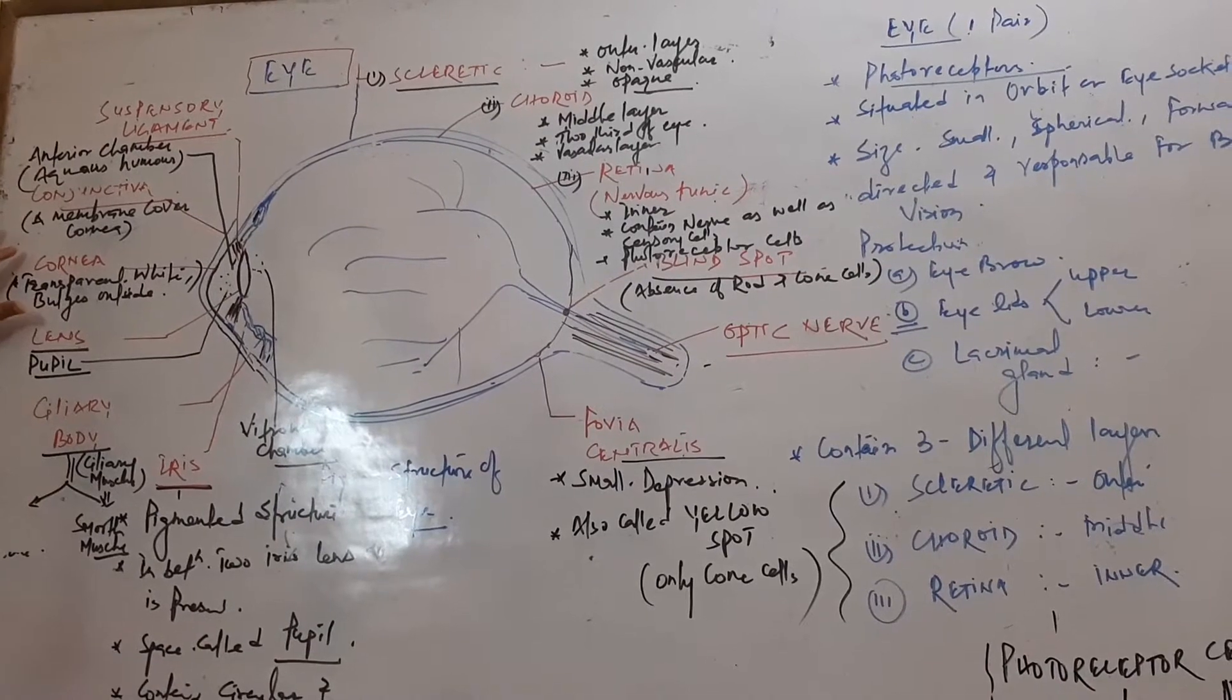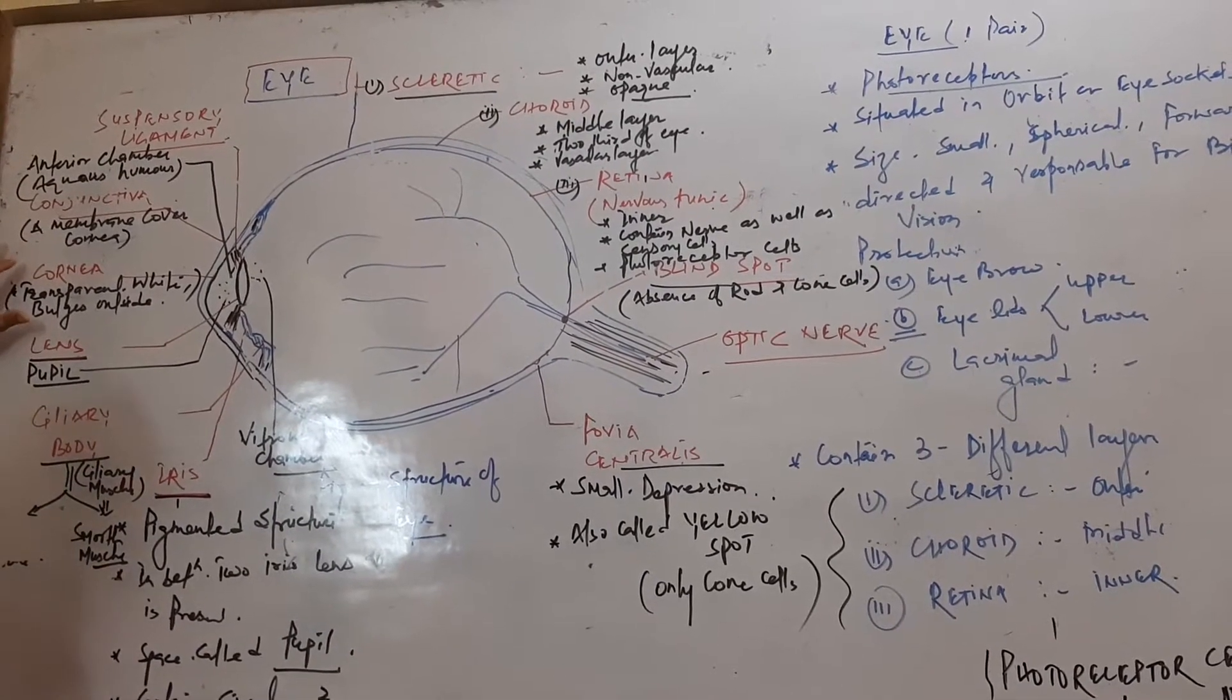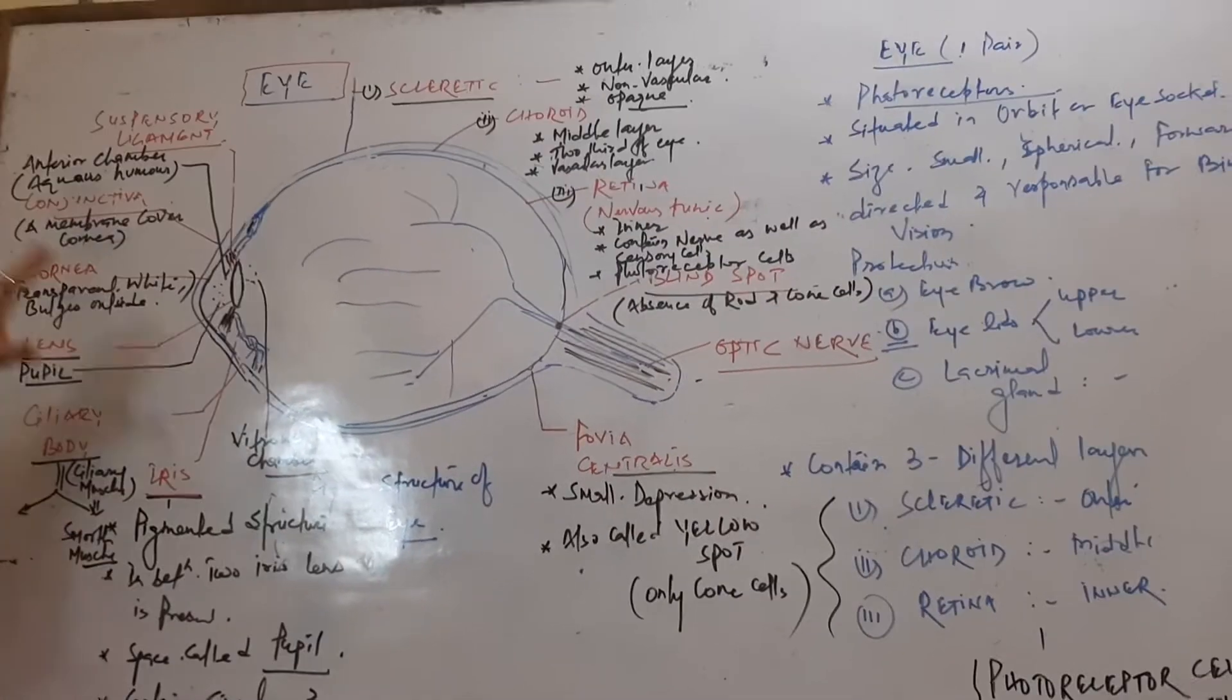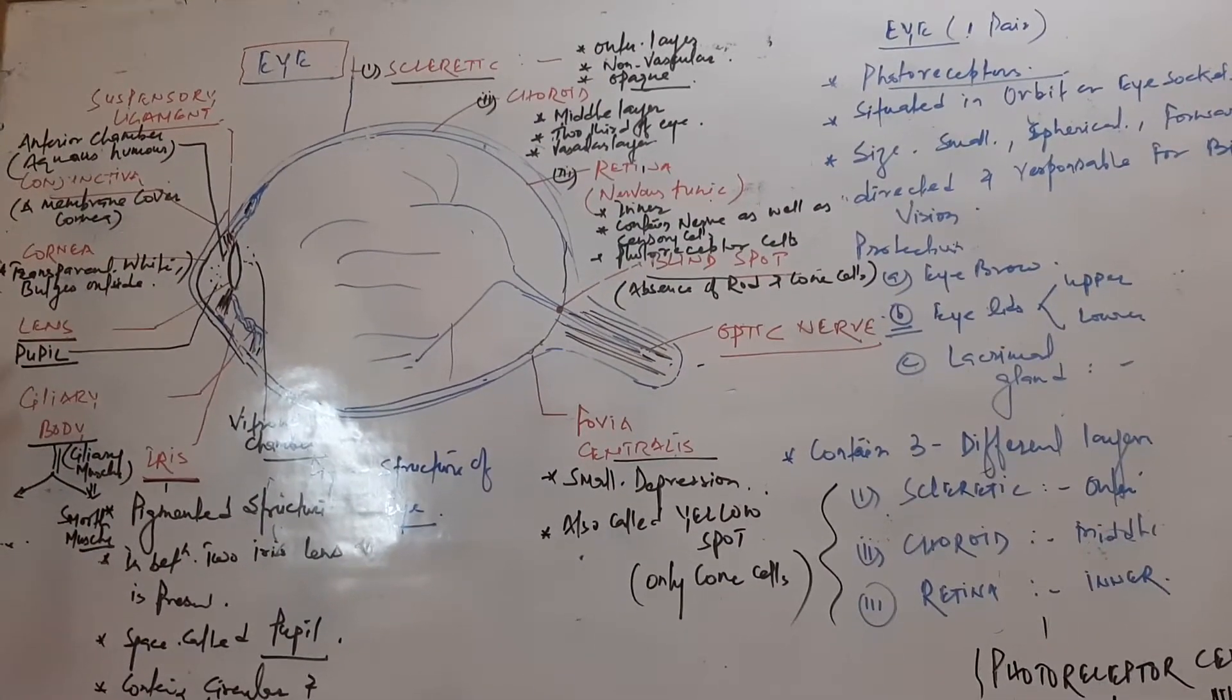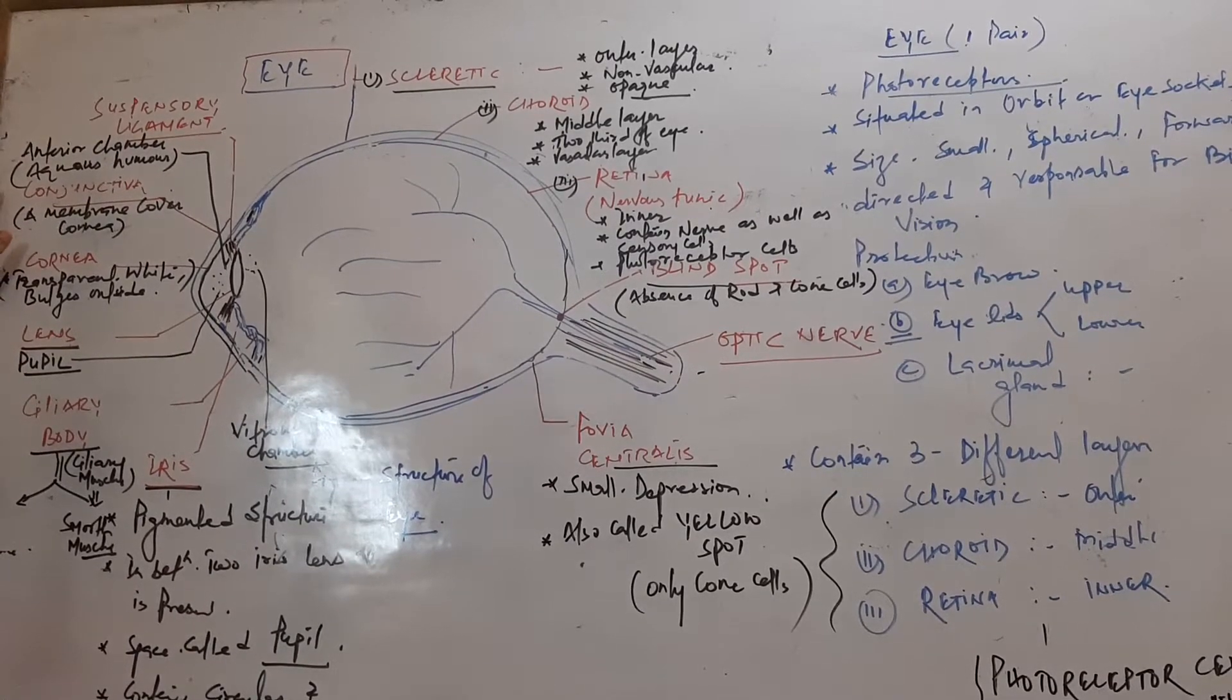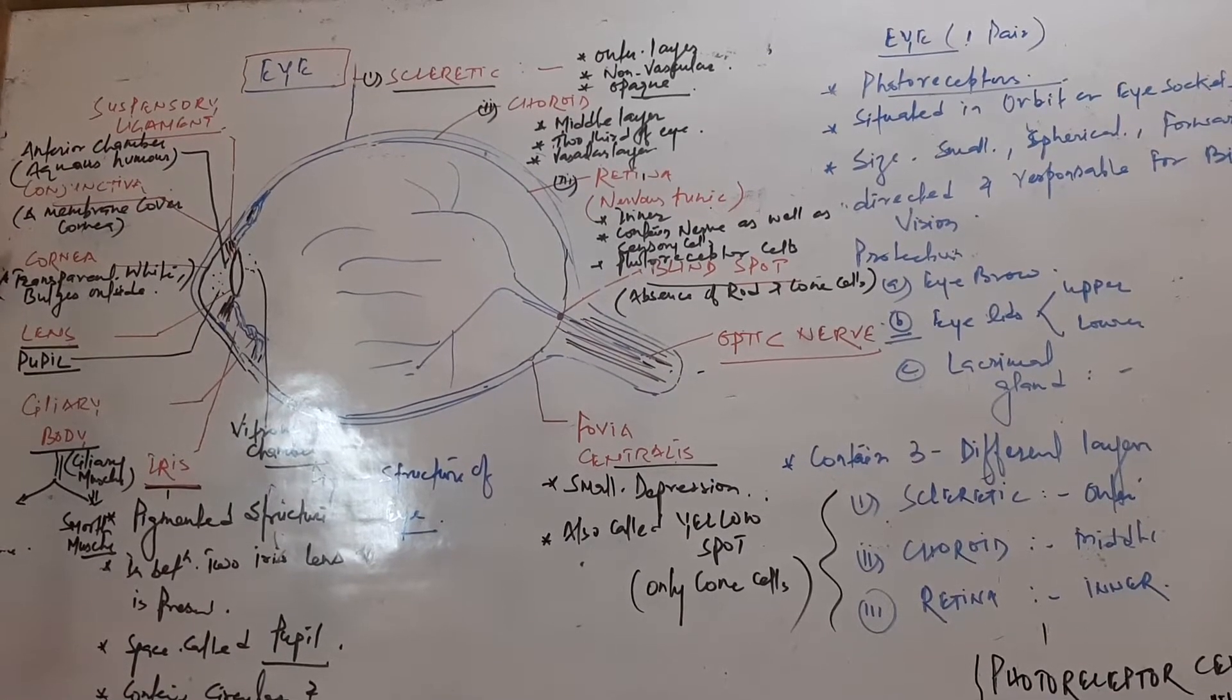Even on the cornea, a layer is present called conjunctiva. Any defect in conjunctiva can lead to infection by viruses. So this is all about the sclera.